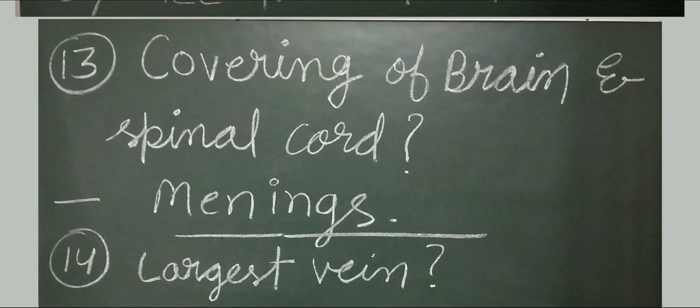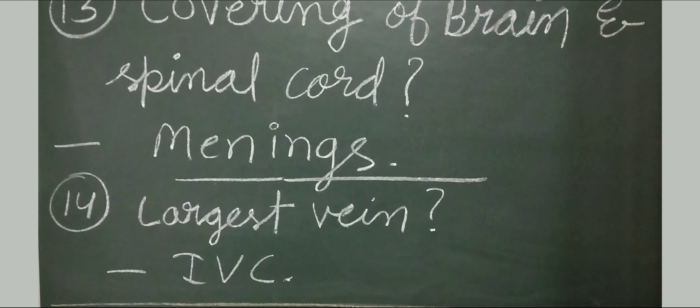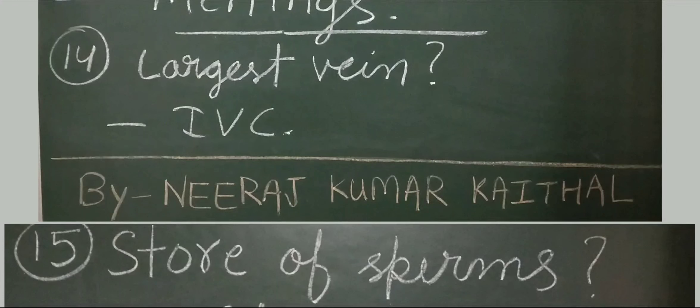Question number 14: largest vein of our body. Inferior vena cava (IVC) is the largest vein. Both the inferior vena cava and superior vena cava are important veins that collect deoxygenated blood from the whole body and deliver it into the right atrium of the heart. Next question: store of sperms.